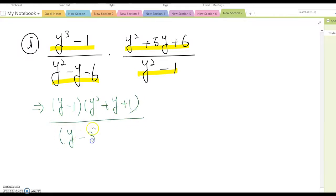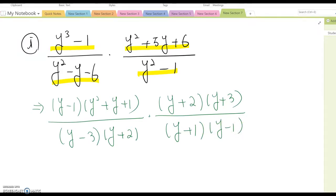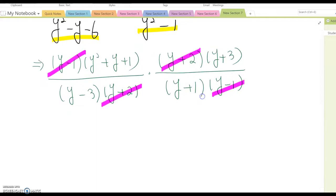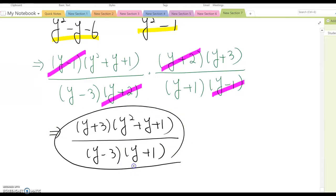It factors to (y² + y + 1)(y - 1) over (y - 3)(y + 2), and (y + 2)(y + 3) over (y + 1)(y - 1). Do you see any common factor between numerator and denominator? Yes, I see some as well, so this is gone and this is gone. Anything else? Nope. Therefore, the answer becomes (y² + y + 1)(y + 3) over (y - 3)(y + 1). That is the answer.